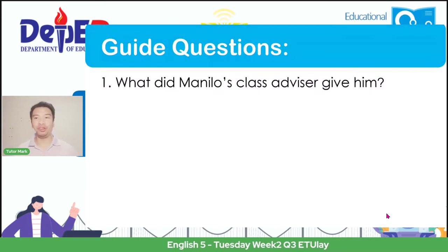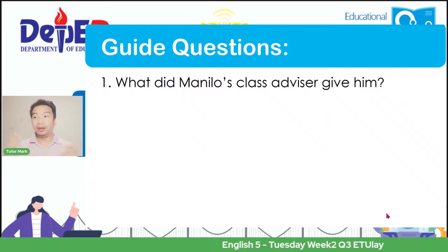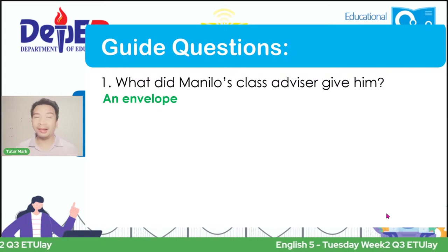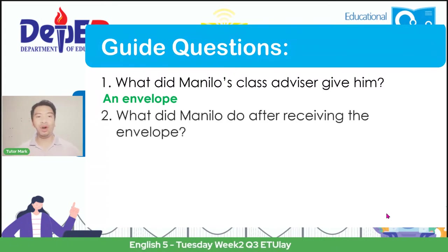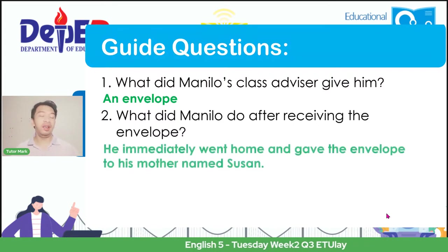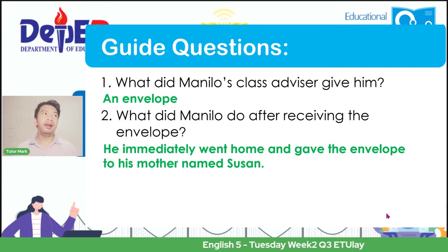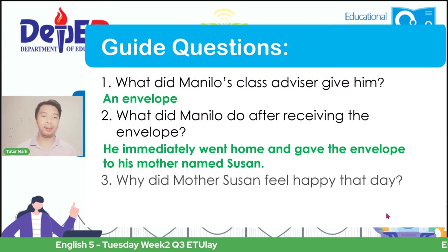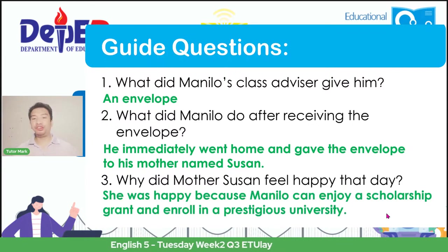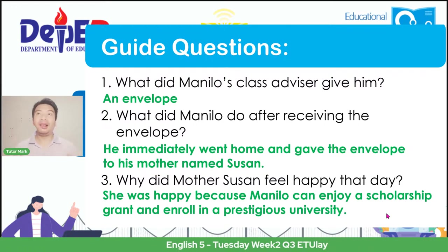These guide questions are also seen in your self-learning module. Let us answer them. What did Manilo's class advisor give him? If your answer is an envelope, then you are correct—that envelope contained important news that needed to be given to his parents. Number two: what did Manilo do after receiving the envelope? If your answer is 'he immediately went home and gave the envelope to his mother named Susan,' then you are correct—because that was what happened in our story.